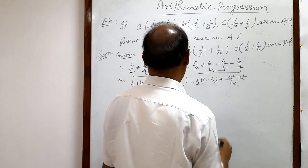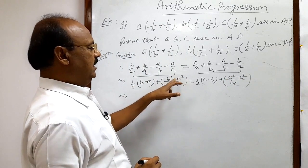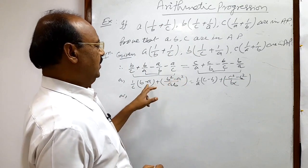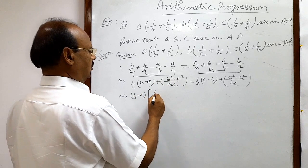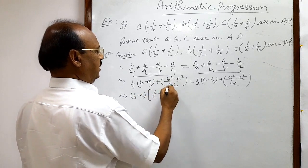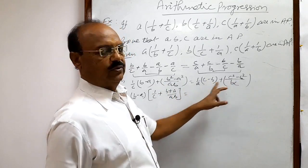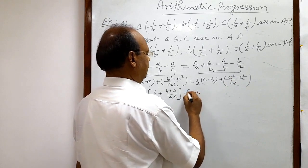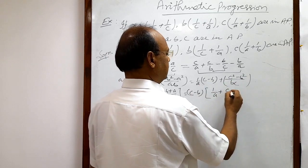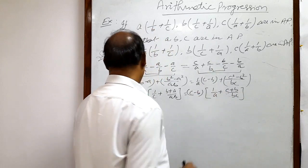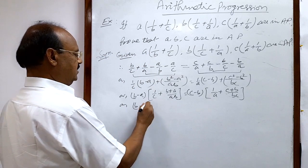Since b² - a² = (b + a)(b - a), we can take (b - a) common from these two terms, giving (b - a) times [1/c + (b + a)/ab]. Similarly, taking (c - b) common from the other group gives (c - b) times [1/a + (c + b)/bc].